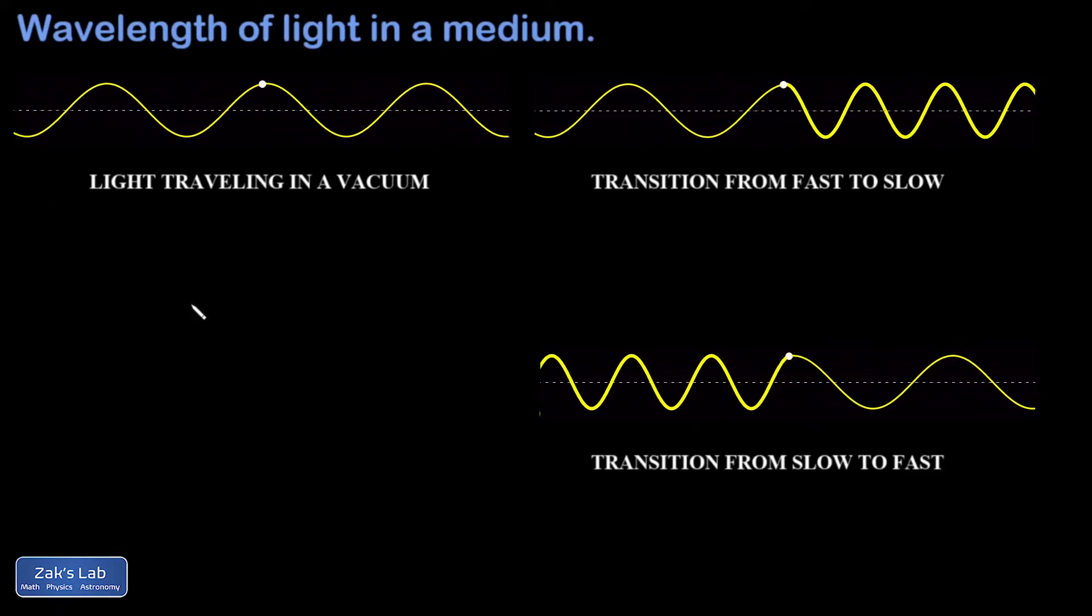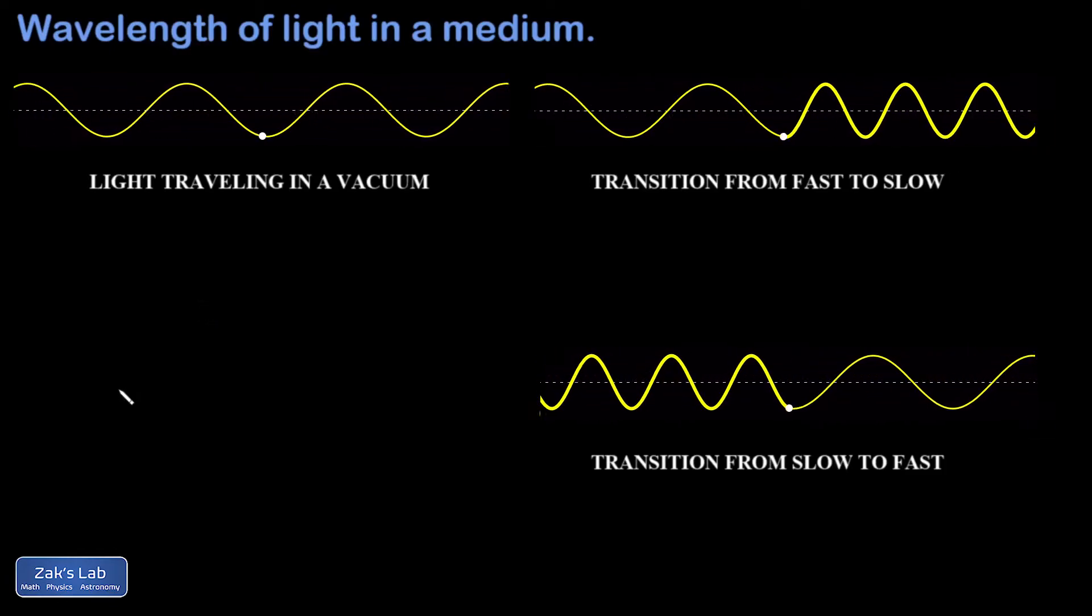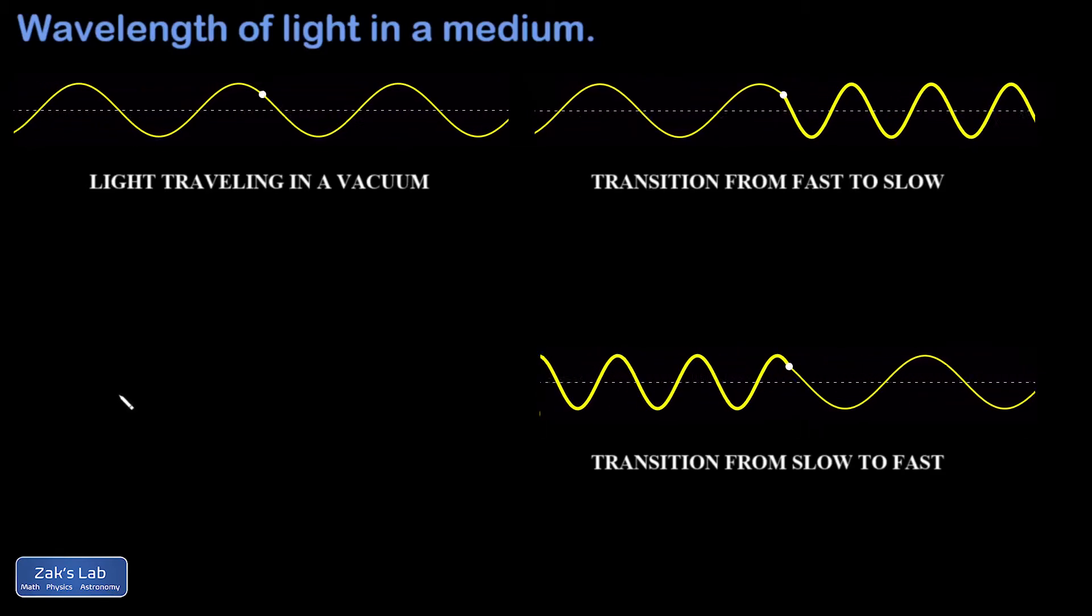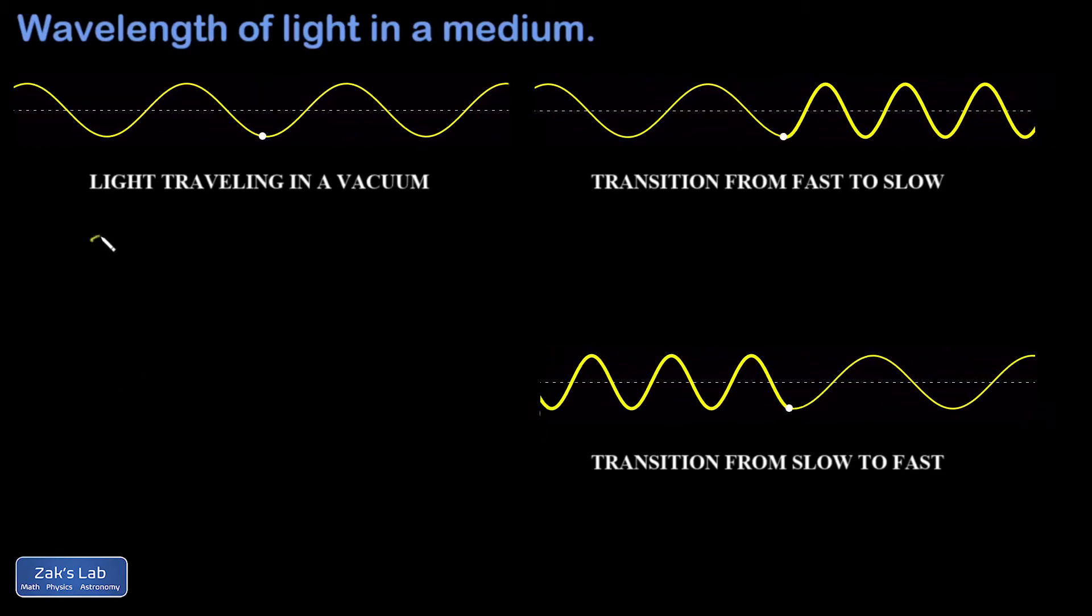Note that I've marked a point on the string that's oscillating up and down. The frequency of oscillation of that point is what we mean by the frequency for the wave.